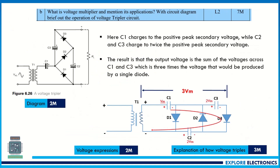The next question: what is a voltage multiplier, and mention its applications? A voltage multiplier is a circuit that multiplies voltages — if we have voltage V1, we can make it twice (voltage doubler) or three times (tripler). Explain this concept and describe where voltage multipliers are used: when you need three, four, or five times the DC voltage, voltage multiplier circuits are used to increase DC voltage with a multiplication factor.